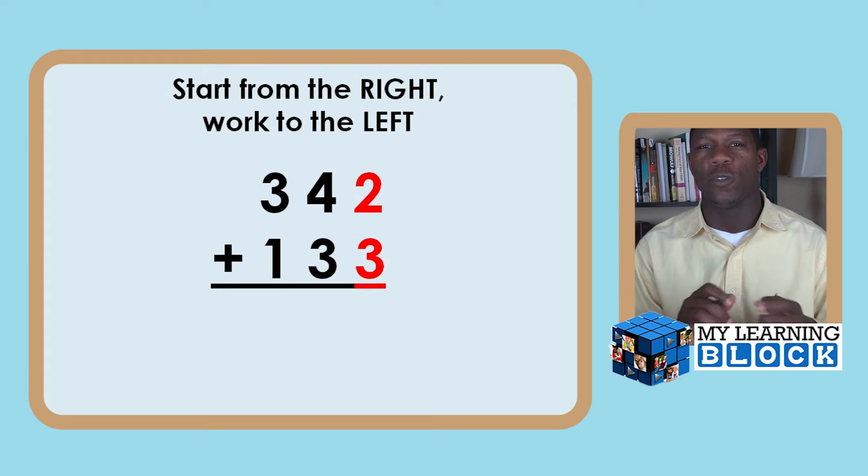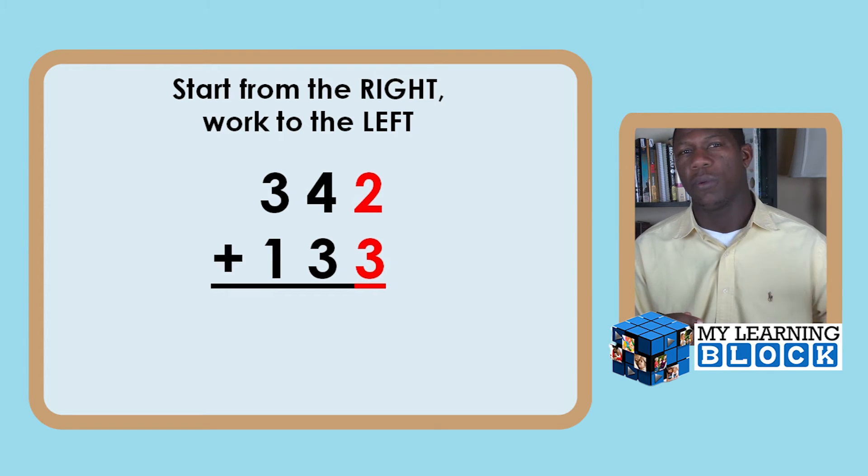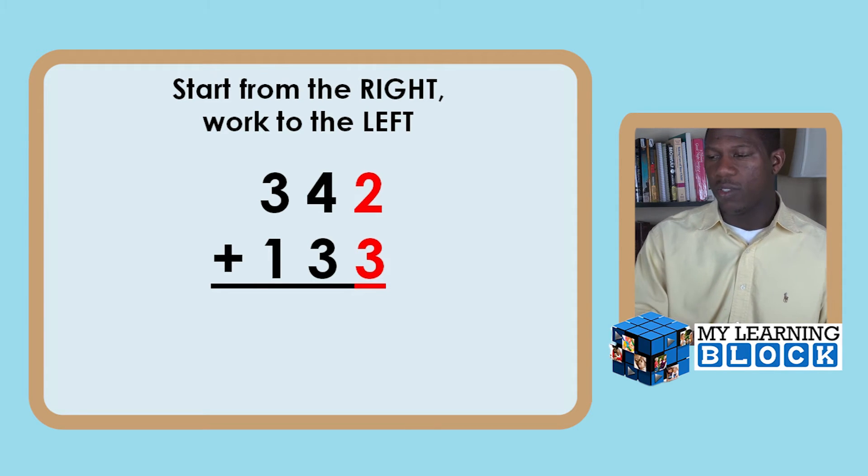It's kind of a reversal of the whole idea of education. Generally we're used to working from left to right but now math is right to left. Once they start working from the right to the left, then more complex things such as multiplying two-digit numbers becomes easier as well. We're going to start off with 342 plus 133.